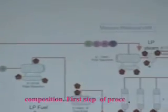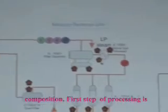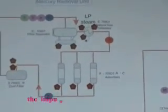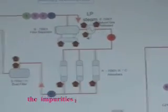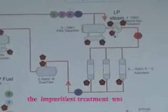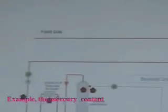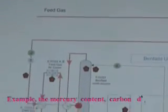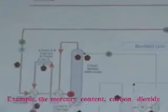The first step of processing is the impurities treatment unit. For example, it removes mercury, carbon dioxide, and moisture content.